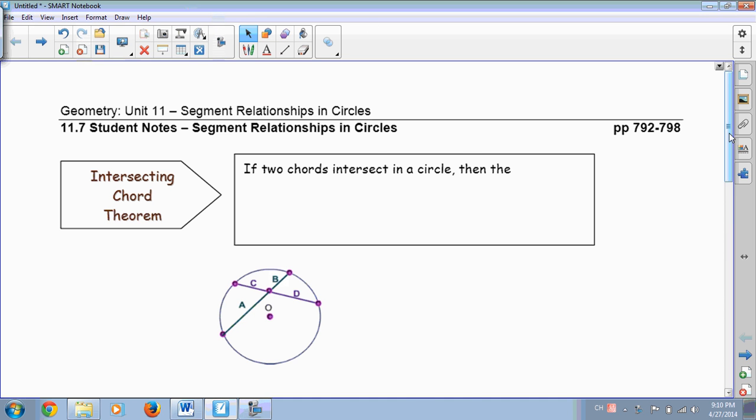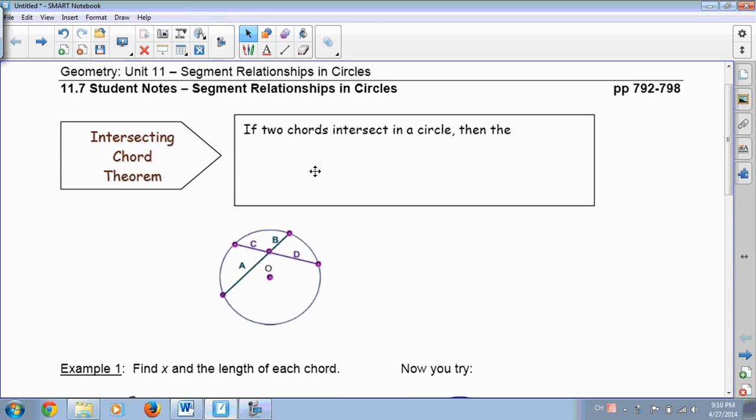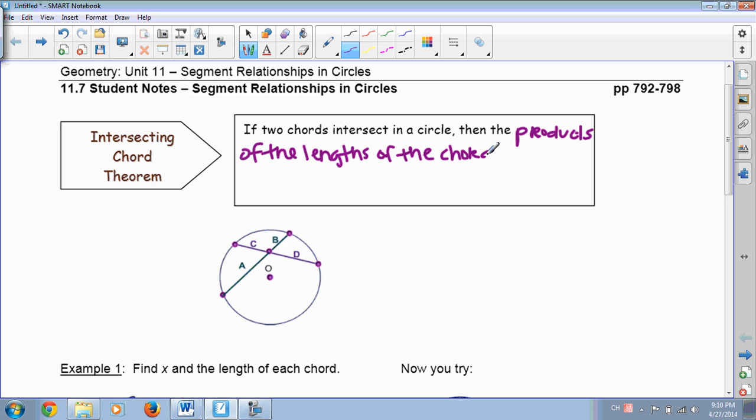The first thing we're going to do here is start out with a theorem. It's called the Intersecting Chord Theorem, which states that if two chords intersect in a circle, then the products, or when you multiply them together, of the lengths of the chords are equal.